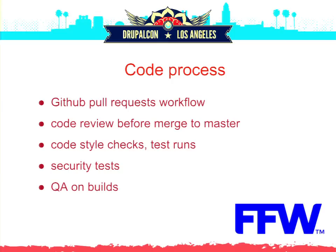Our coding workflow has changed significantly. We have switched to GitHub completely on our teams, and that helped us a lot with the great feature of pull requests. When you make changes, you create a branch, do your coding in the branch, and then request those changes to be merged back to master — that moment is called a pull request. GitHub is very handy for doing code reviews. We shifted code review from happening after a merge to happening before changes are merged to master. We always have at least two people working on the project and they do code reviews of each other.